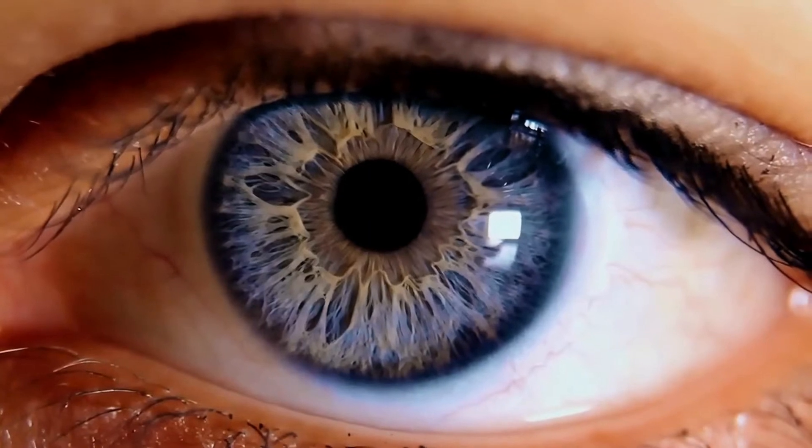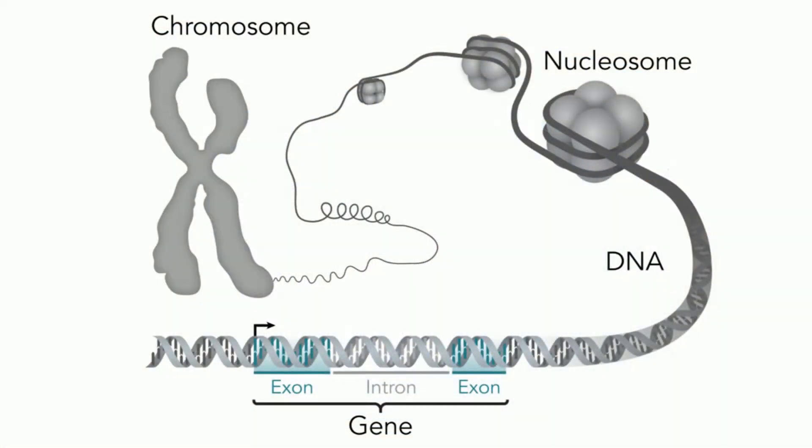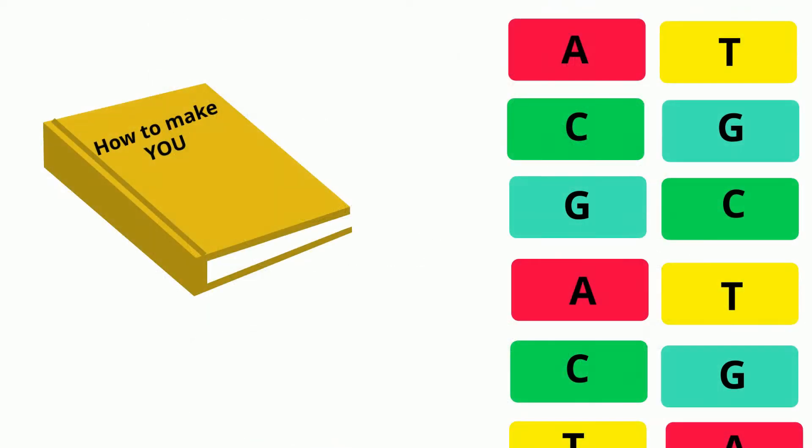The DNA on chromosomes is arranged in segments called genes, which are the instructions for the proteins that create the traits.